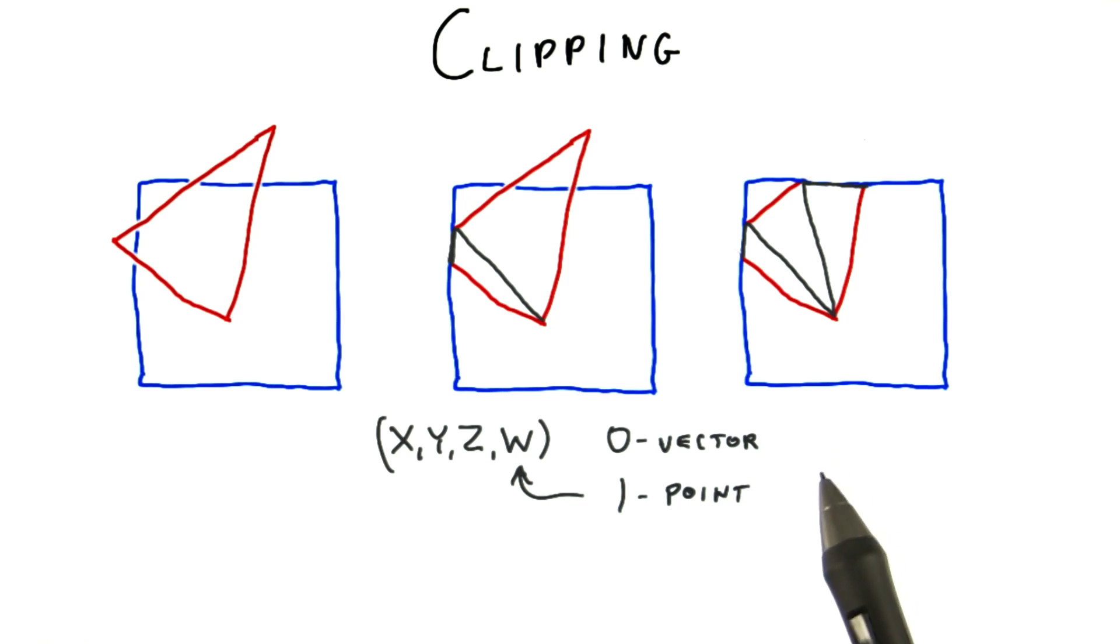Once clipping is done and we're using normalized device coordinates, we're done with homogeneous coordinates. However, these homogeneous coordinates are important in that they're what the vertex shader produces.